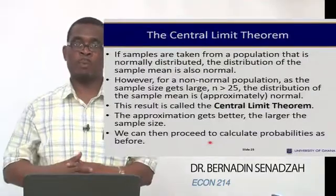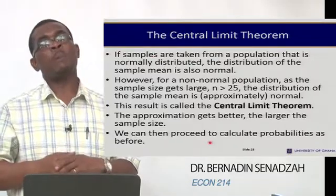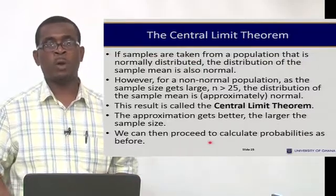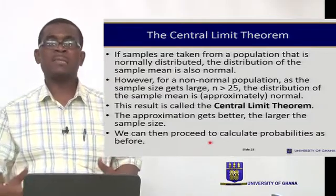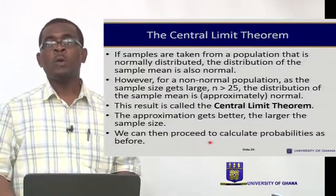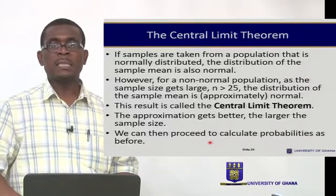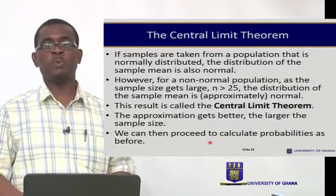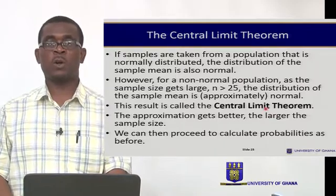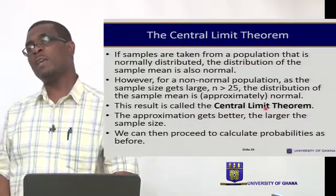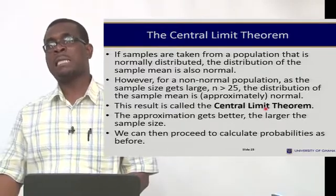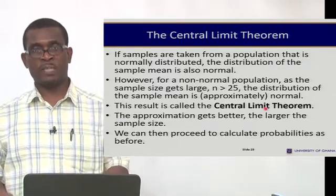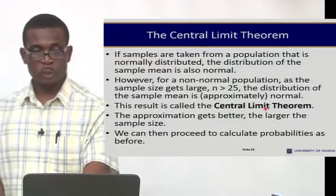We've been assuming the population is normal. But if the population is not normal, or is non-normal, but the sample size is large — say 25 or more — then the sample mean obtained will approximately be normally distributed. This key result is called the central limit theorem. Even if samples are drawn from a non-normal population, if the sample size is large (25 or more), we expect the distribution of the sample mean to be normally distributed.